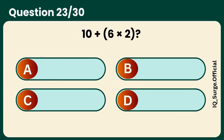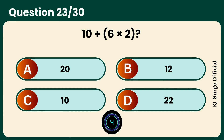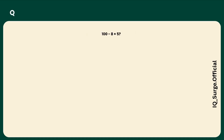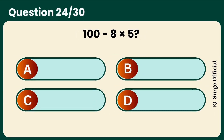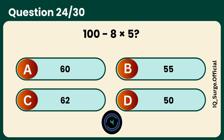What is the result of 10 plus 6 times 2? 22. 100 minus 8 times 5? 60.